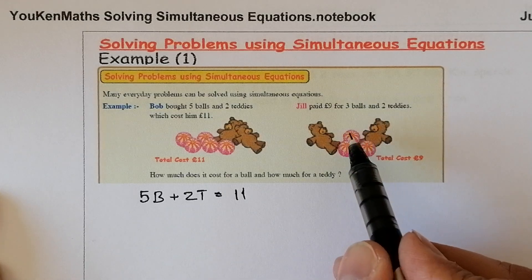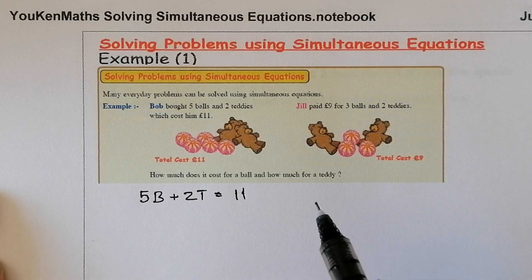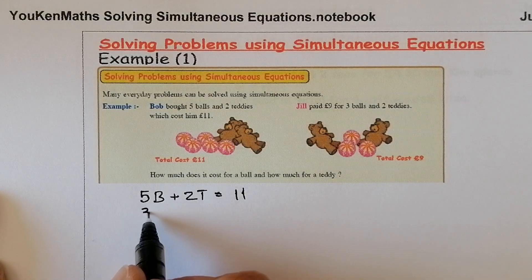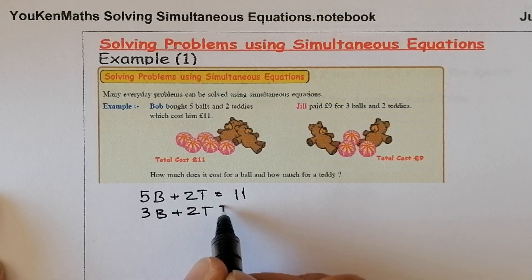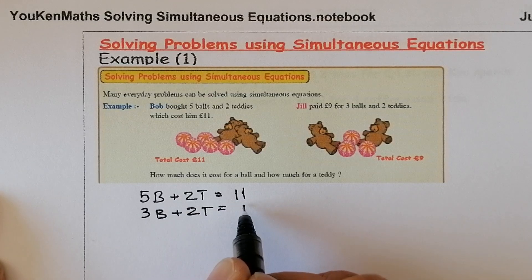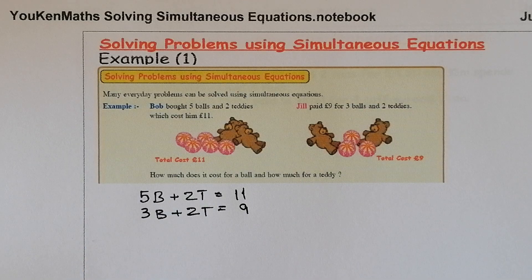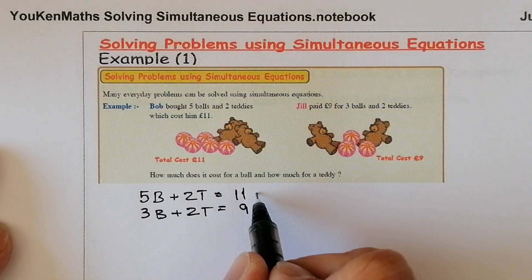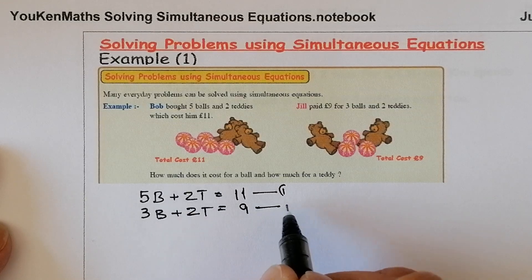For the other equation, Jill paid £9 for three balls and two teddies. So three balls and two teddies equals £9. There I've got two equations that will allow me to work simultaneously to find out what a ball costs and what a teddy costs. We'll use the experience we've had so far on solving simultaneous equations.